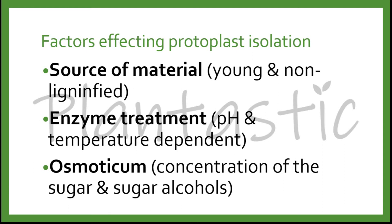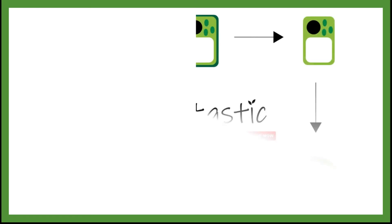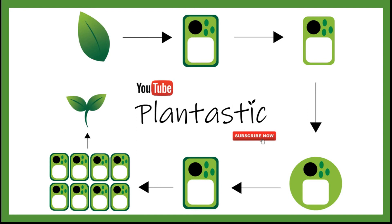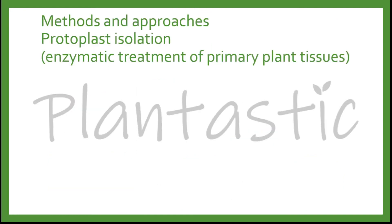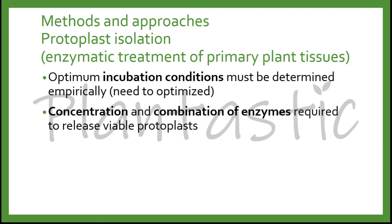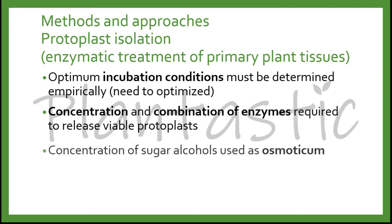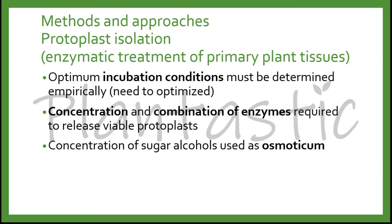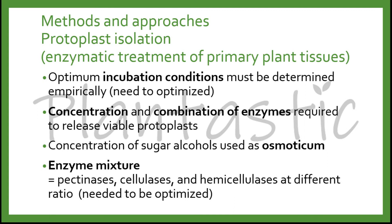You may refer to our previous video in the plant tissue culture playlist titled media composition. This is the general flowchart for protoplast culture. For the methods and approaches, first is protoplast isolation, which involves enzymatic treatment of primary plant tissues. The optimum incubation condition must be determined empirically — we need to optimize the concentration and combination of enzymes required to release viable protoplasts, as well as the concentration of sugar alcohols used as osmotic agent. The enzyme mixture can be a combination of pectinases, cellulases, and in some cases hemicellulases, added at different ratios.